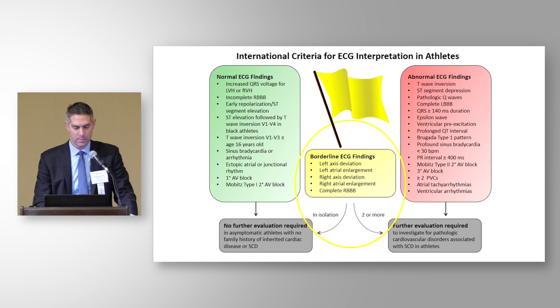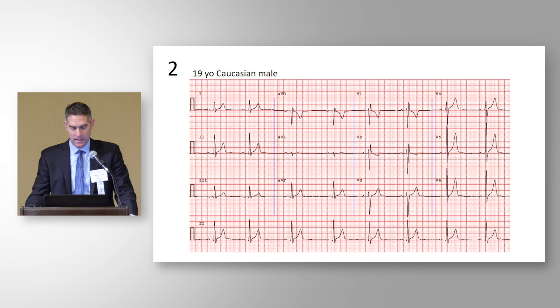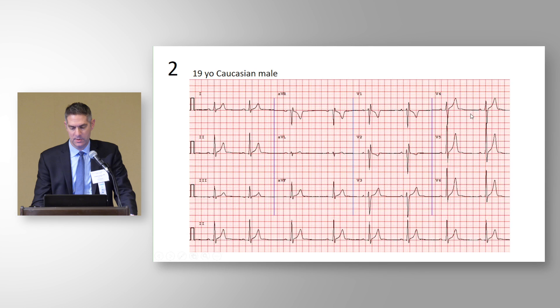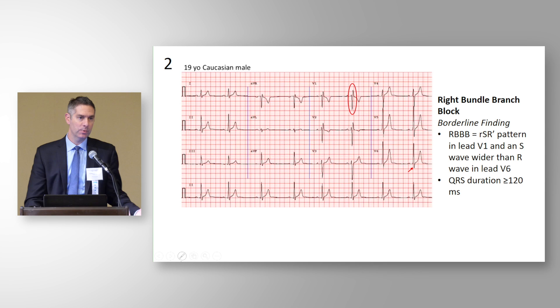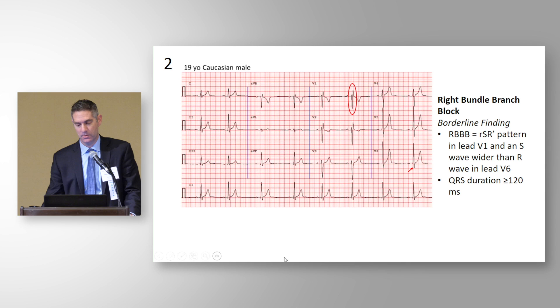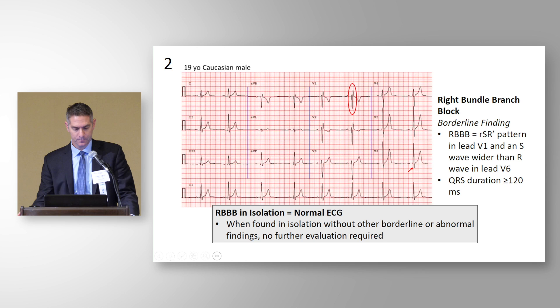Now let's look at borderline ECG findings. This is a 19-year-old Caucasian male. As I come to lead V1, I see a rabbit-ear appearance, making me suspicious of a right bundle branch block, and a large S wave in V6. This is an example of complete right bundle branch block, with an RSR prime in V1 and a relatively large S wave in V6. The distinction between incomplete and complete right bundle branch block is the QRS duration — 120 milliseconds or more makes it a complete right bundle branch block.